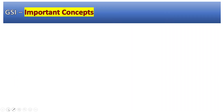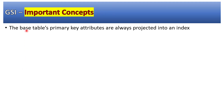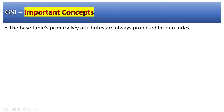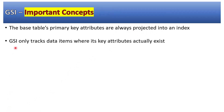The base table's primary key attributes are always projected into an index, regardless of whether you use keys-only or any other projection type — always remember that. Also, GSI only tracks data items where its index attributes actually exist.